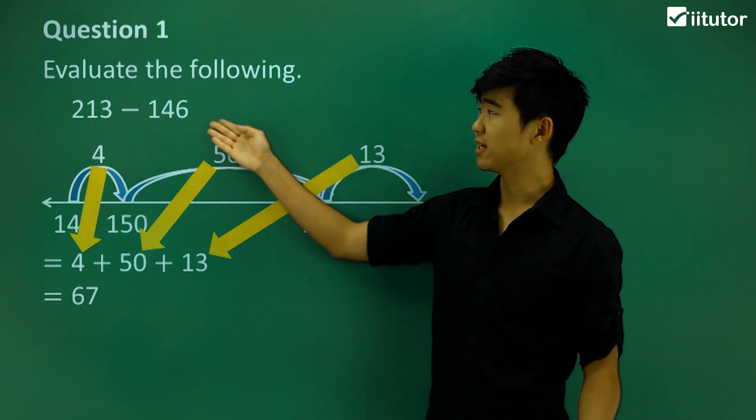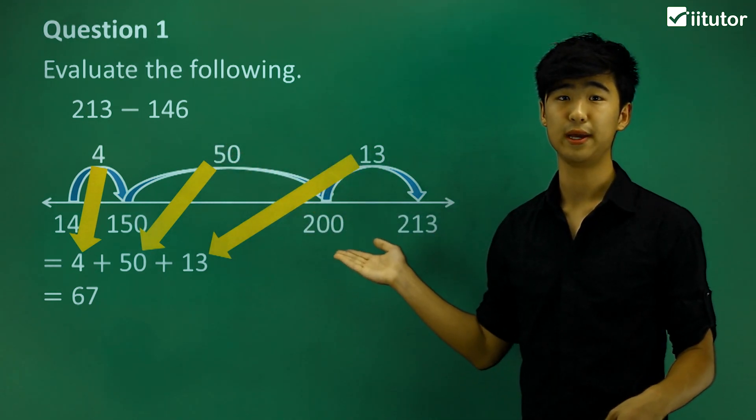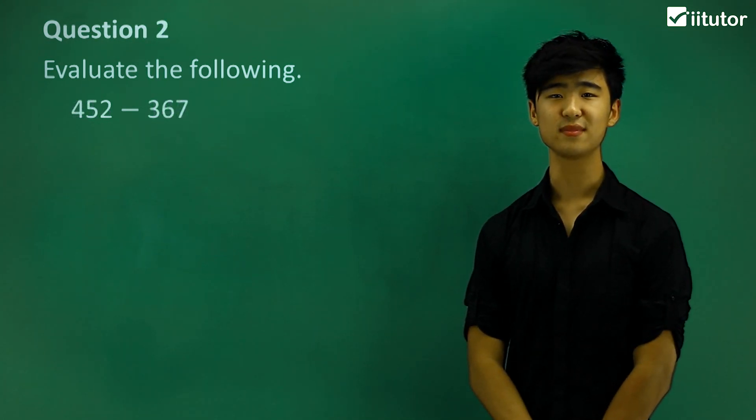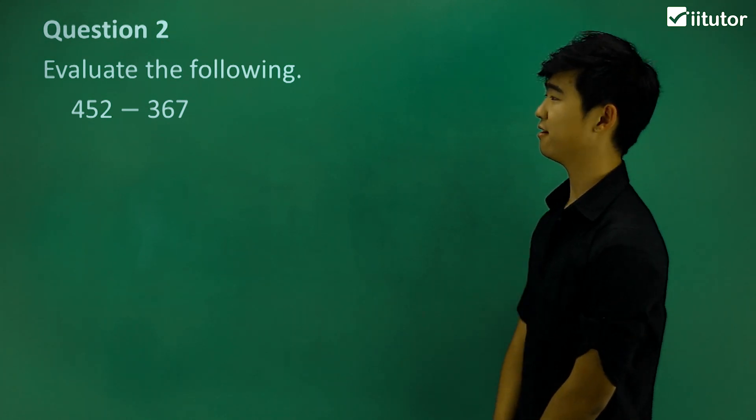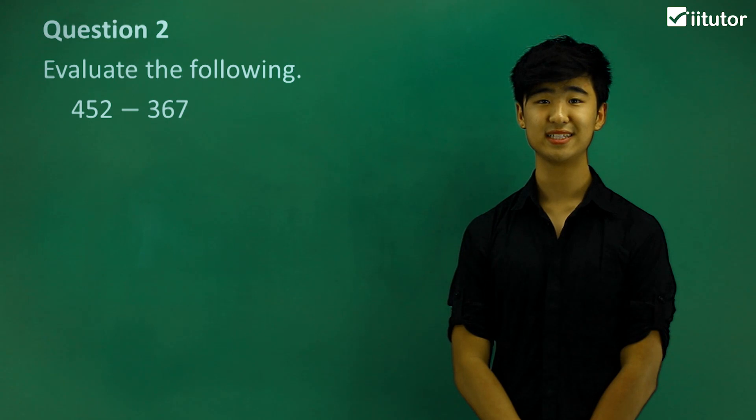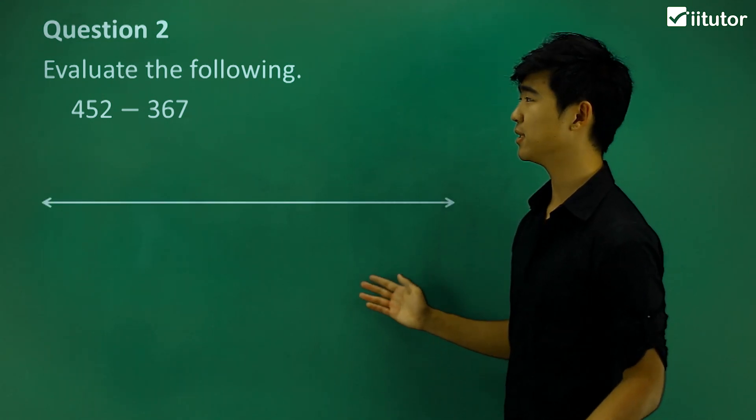So that's one way we can evaluate subtraction questions like this using a number line. Now let's move on to question number two. Evaluate the following: 452 minus 367. Similarly, let's write it on a number line.